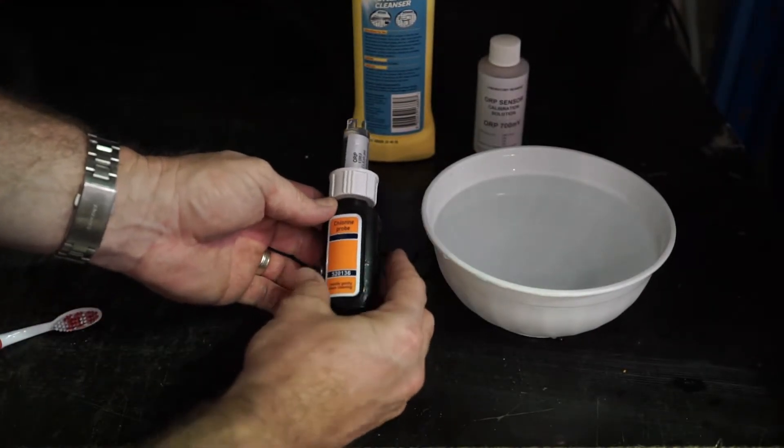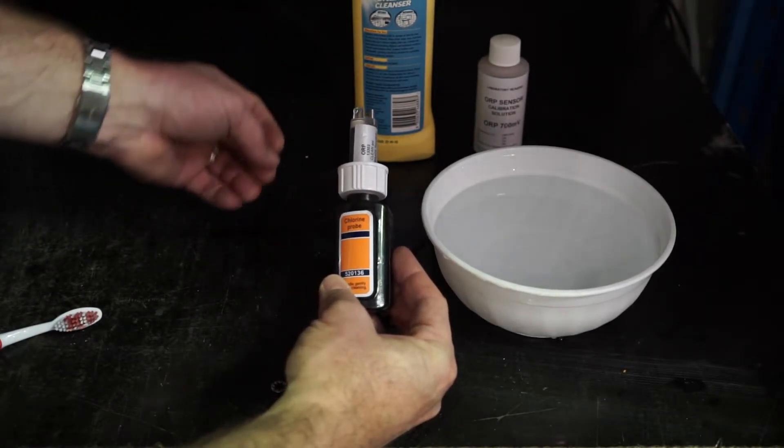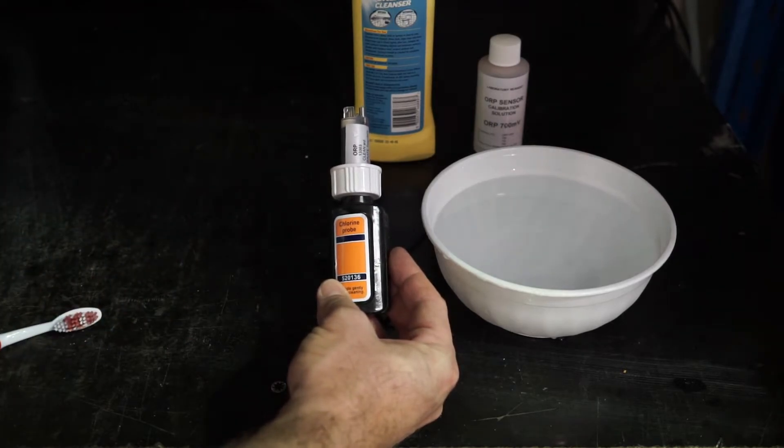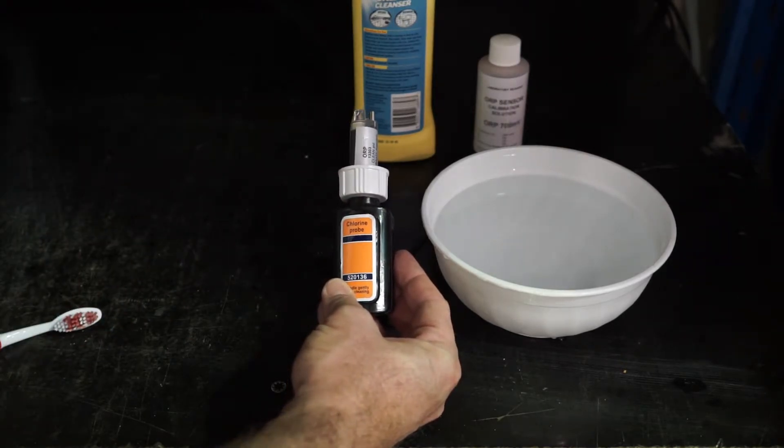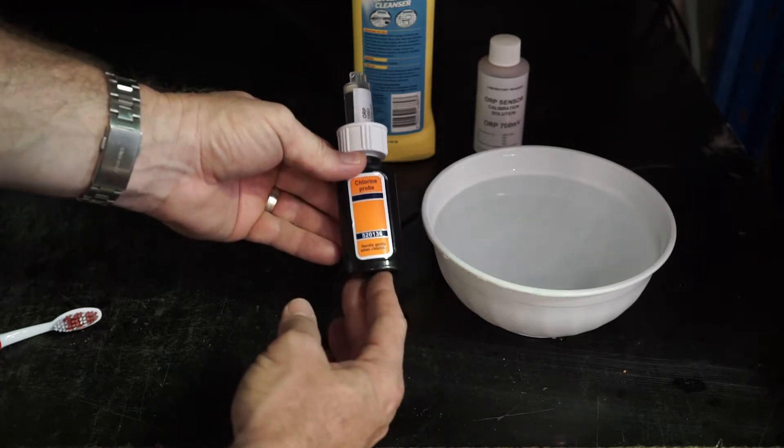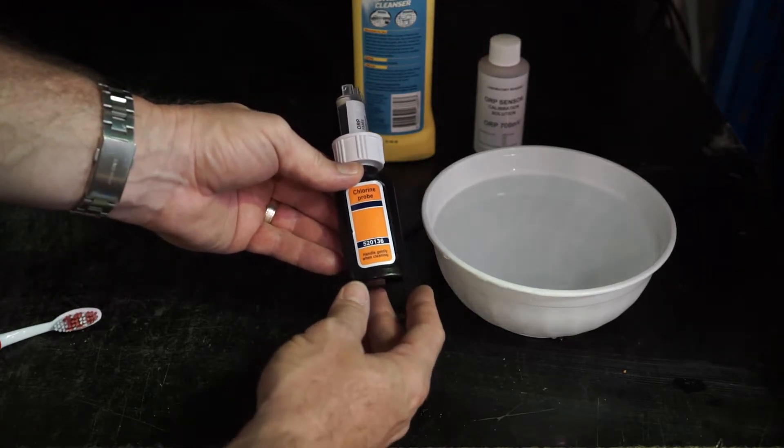Okay, so after servicing our Astral Pearl Viron Equilibrium Chlorinator, replacing our acid squeeze tube, cleaning and calibrating our pH probe, we're now going to clean and calibrate our gold tip chlorine probe.